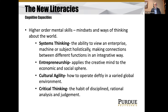Some of the other higher-order mental skills that are needed involve a mindset and ways of thinking about the world. We need to get students and graduates to start being systems thinkers — viewing their discipline within the entire industry and thinking holistically, making connections in an integrative way. They need to be much more entrepreneurial and creative, applying the creative mind to the economic and social sphere. They need to have cultural agility because we're working in a global environment, and they need to be much more critical thinkers — with the habit of disciplined, rational analysis and judgment.